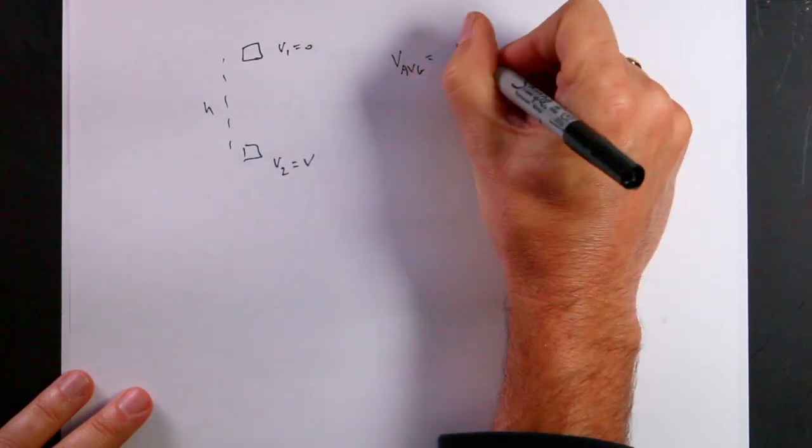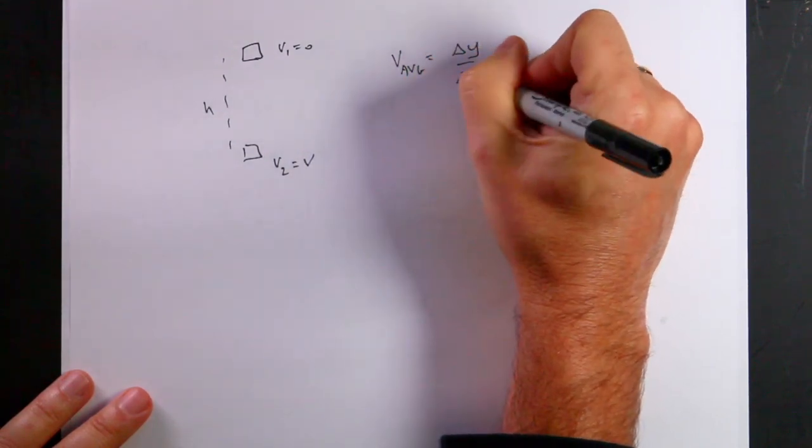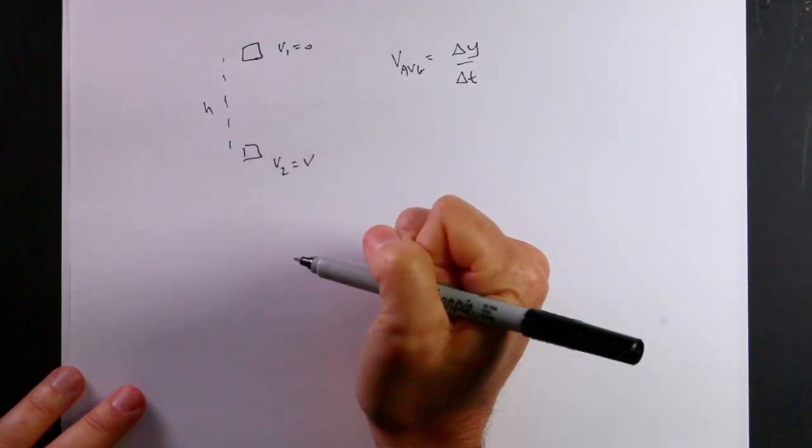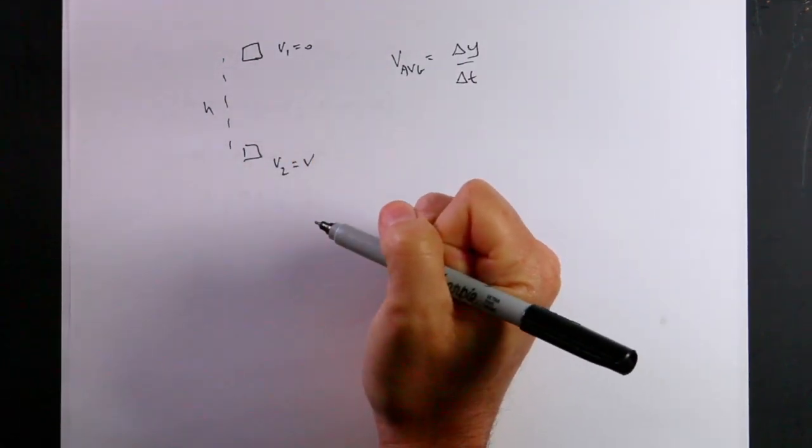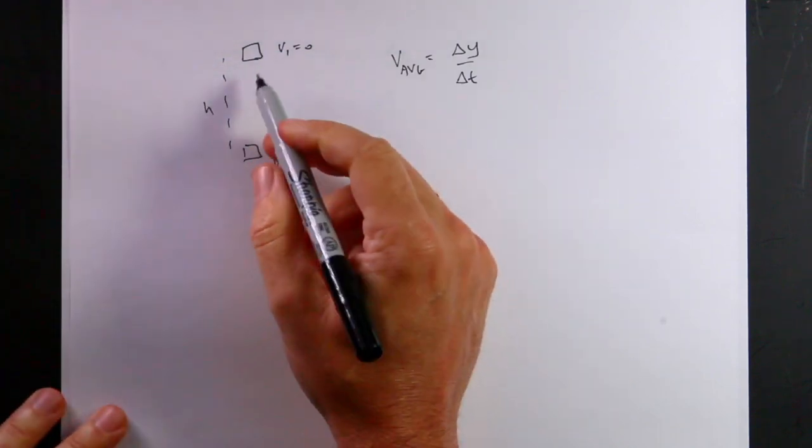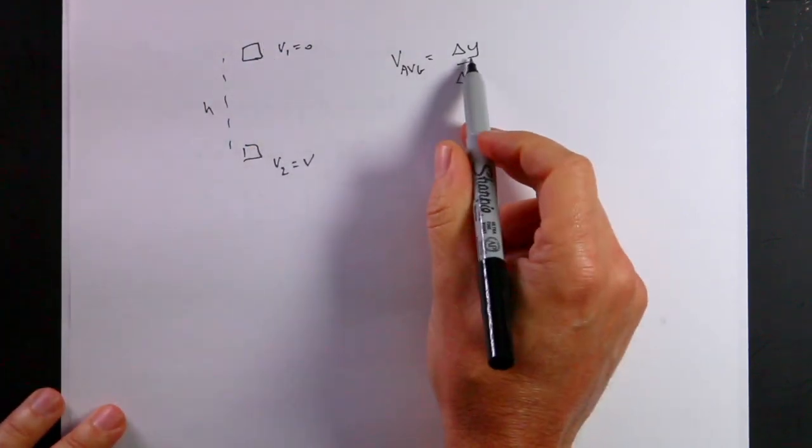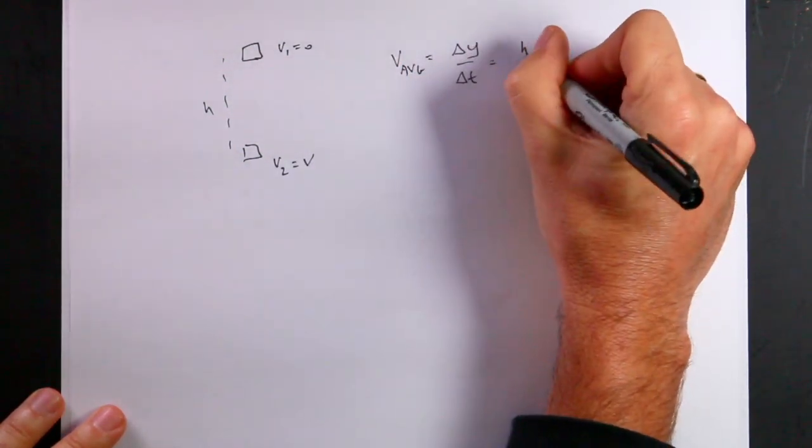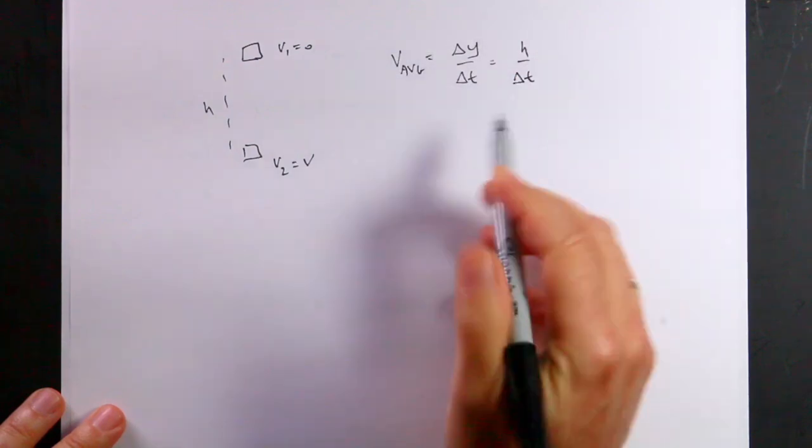So let's start with the definition of average velocity. V1 equals delta Y over delta T. And this is actually, I guess we should say, I want the magnitude of the acceleration. I've already taken into account the direction. So I'm just going to use, say delta Y, and this is the average velocity, it's going to be H over delta T. That's how far it went, that's how long it took, and that's the average velocity.